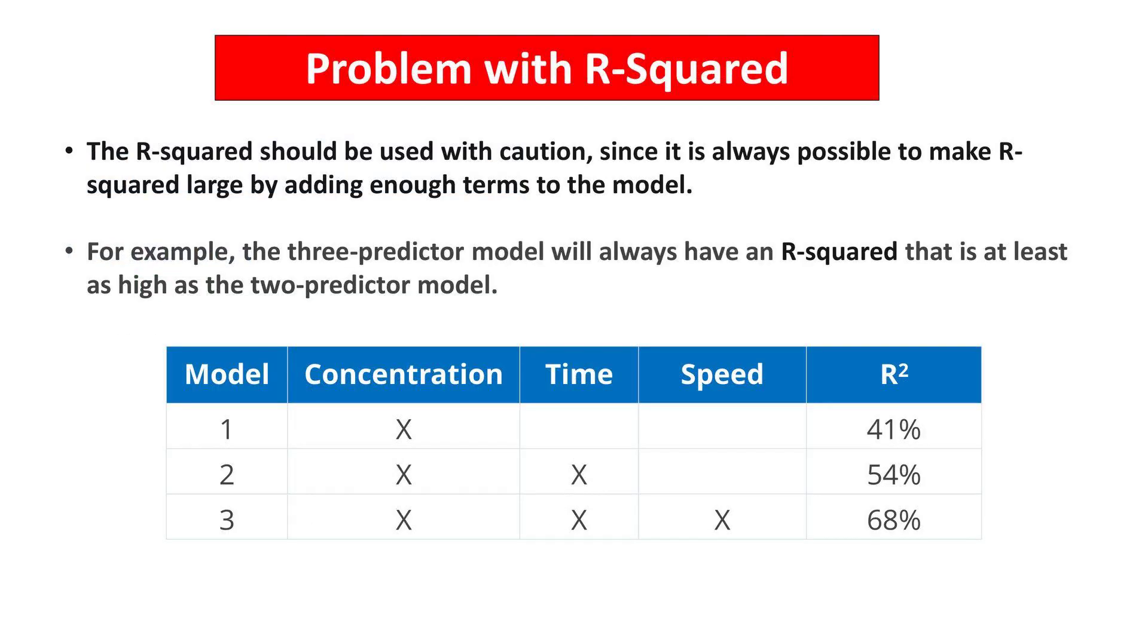While R-squared is useful, it can be misleadingly high if unnecessary terms are added to the model. For example, the three-predictor model will always have an R-squared that is at least as high as the two-predictor model.